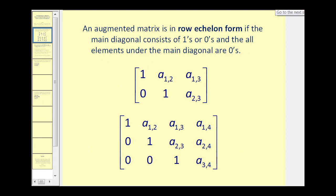An augmented matrix is in row echelon form if the main diagonal consists of ones or zeros, and all of the elements under the main diagonal are zeros. So here are the main diagonals, and those must be ones or zeros, and then the elements under the main diagonal must be zeros, as we see here and also here.